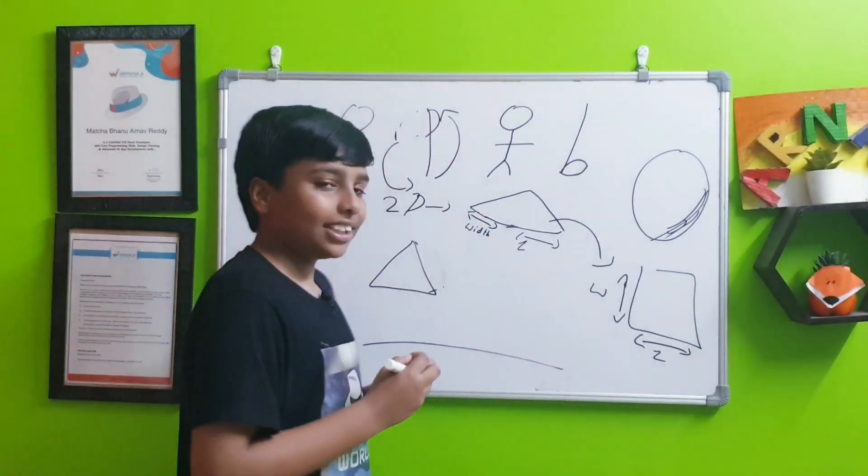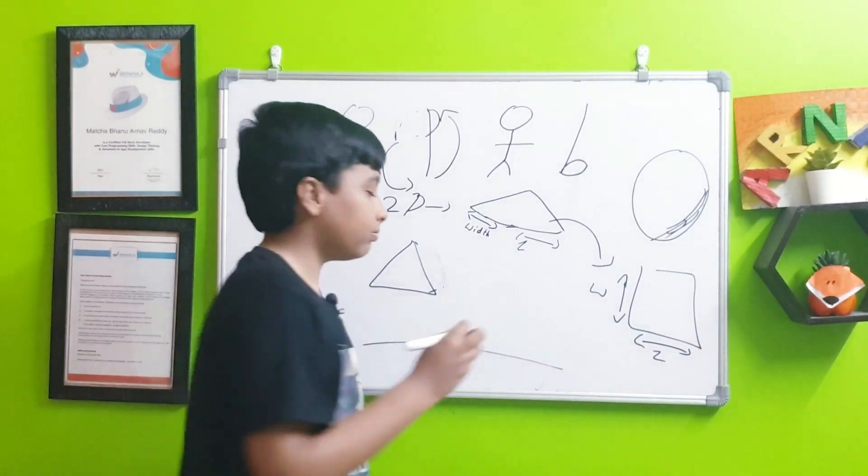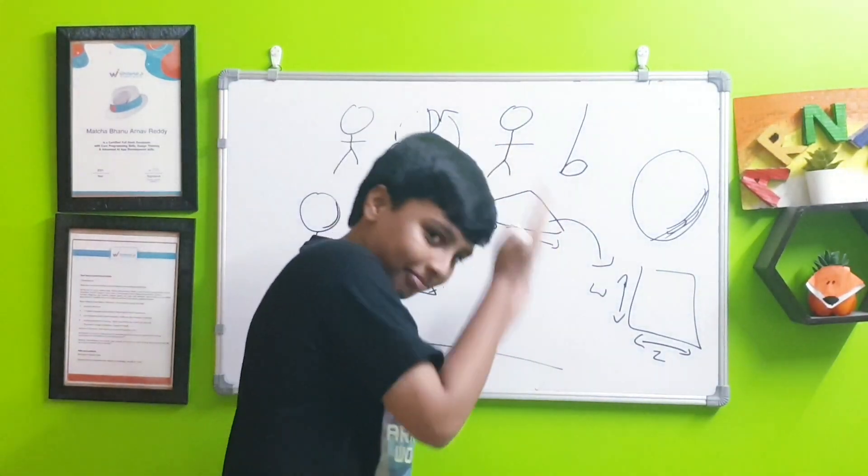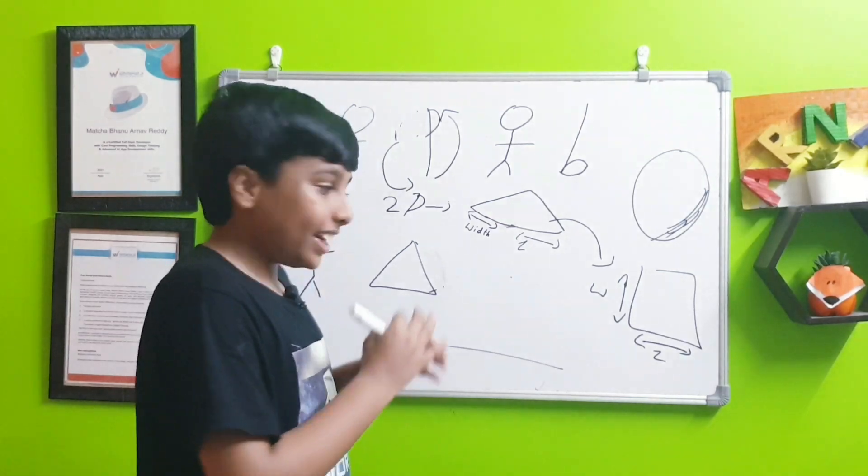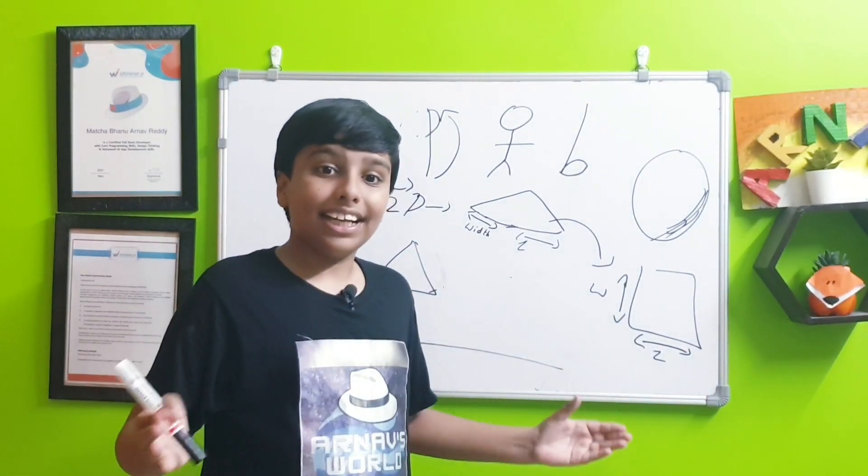Last and finally, the 0D is just a dot which is infinitely very small and very large. It has no particular size or shape. It's just a dot with nothing.